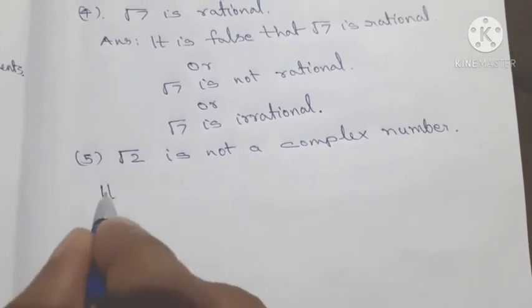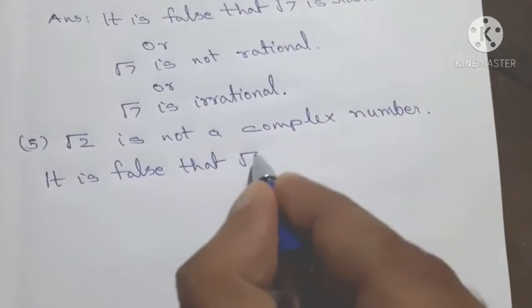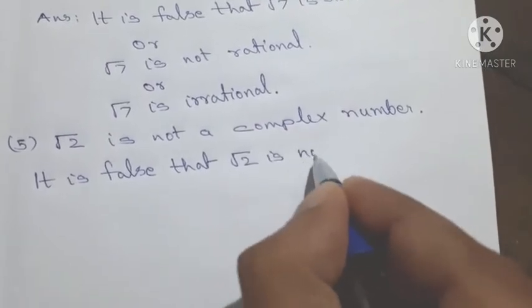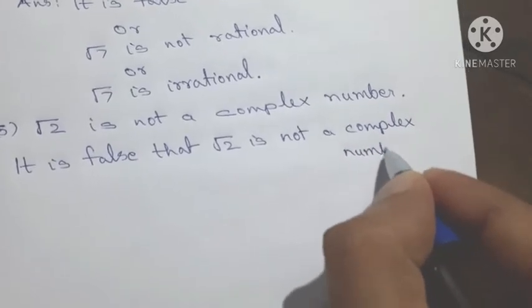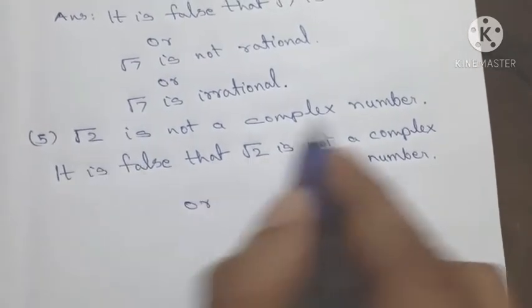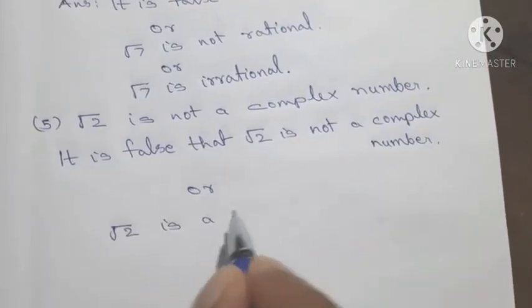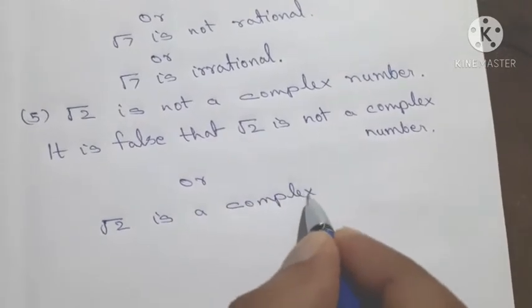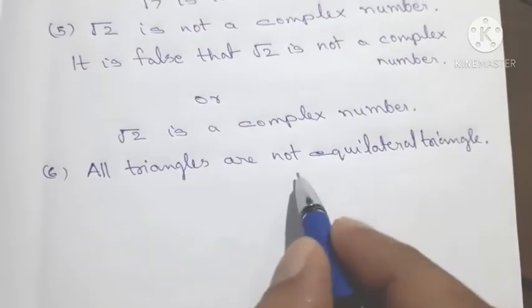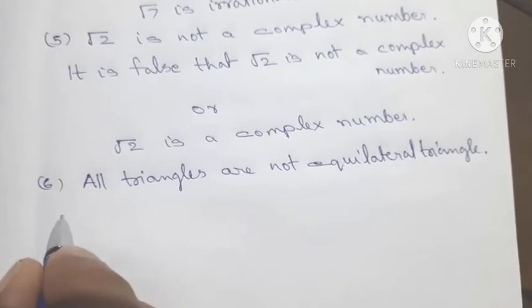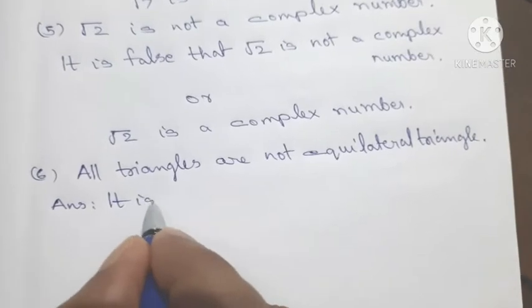It is false that root 7 is irrational. It is false that root 2 is not a complex number.